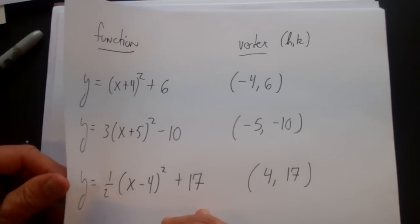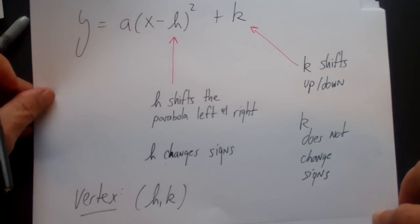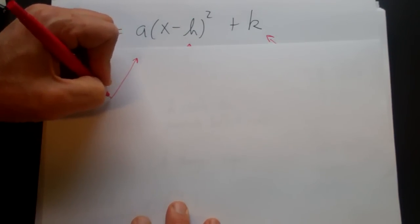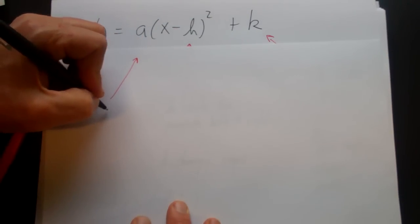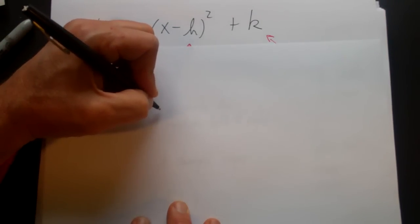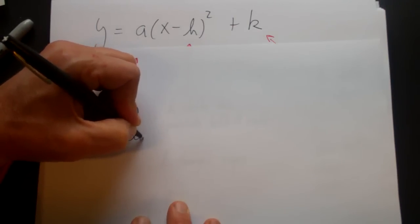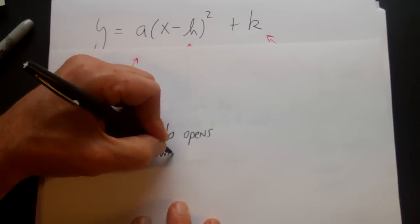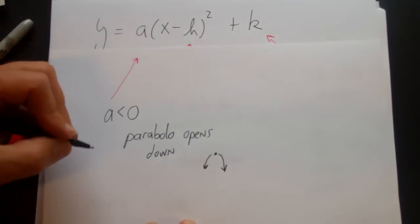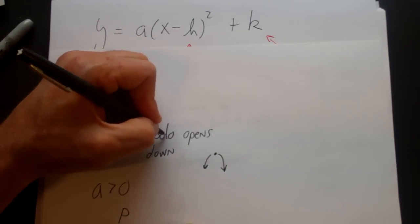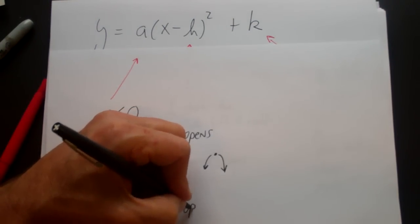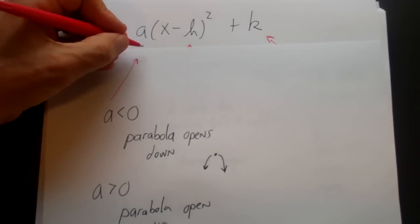Now let's look at what a does. The a actually does two things. The first thing is if a is negative, then the parabola will flip or open down. If a is positive, the parabola will open up — in other words, it doesn't flip. So a negative a flips the parabola.